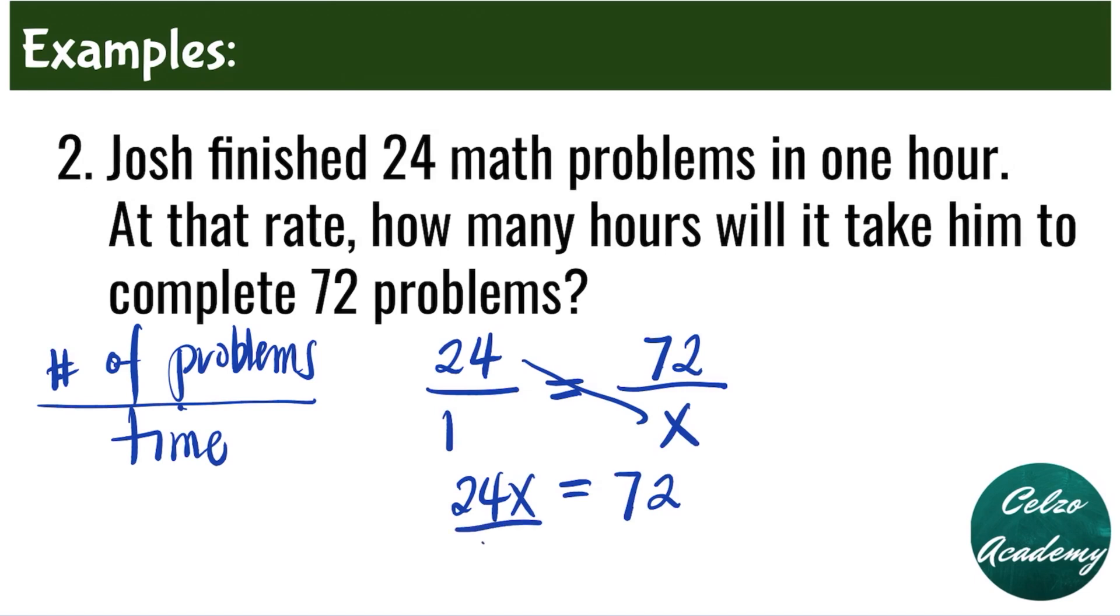The next step is to divide both sides by 24. This means that x is equal to 3. So Josh will take 3 hours to complete 72 problems.